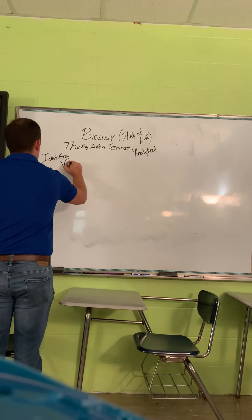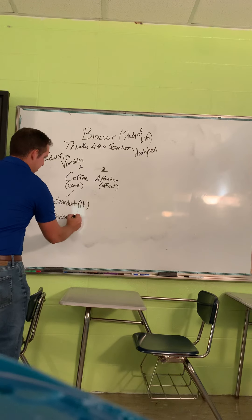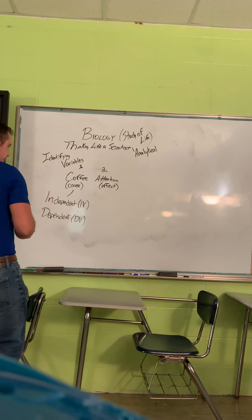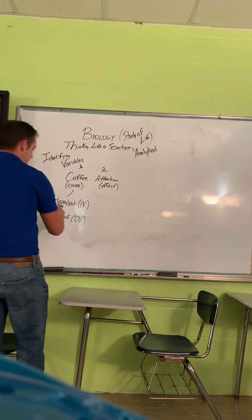Which one causes which? We already said coffee has the effect on attention. So if we break it down into cause and effect, coffee is the cause and attention is the effect. These are our two variables. However, we're not going to call them cause and effect — we're going to call them independent and dependent. So we have an independent variable (IV) and a dependent variable (DV). We need to be able to identify the IV and the DV in a science experiment, but we can also see these two variables in everyday life. That's what we're going to talk about in this first lesson — just getting a grasp on what each one is.